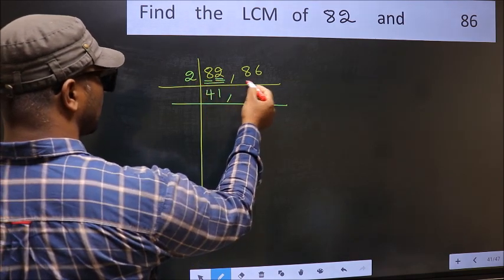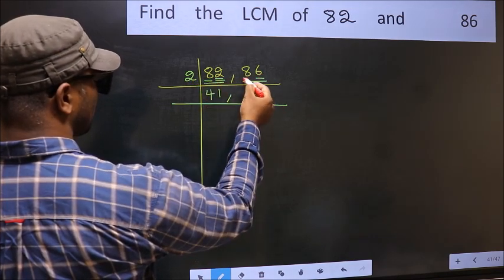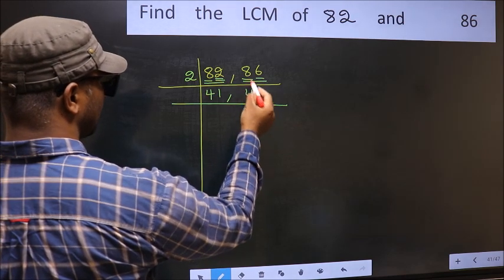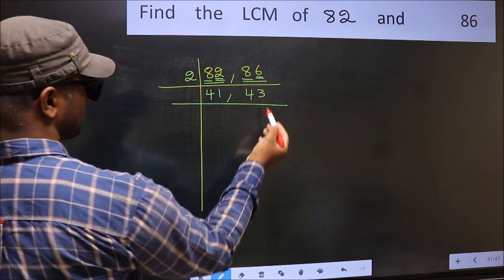Now, the other number 86, last digit 6, even, so this is divisible by 2. First number 8, when do we get 8 in 2 table, 2 fours are 8. The other number 6, when do we get 6 in 2 table, 2 threes are 6.